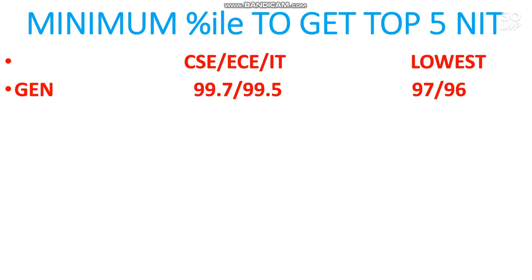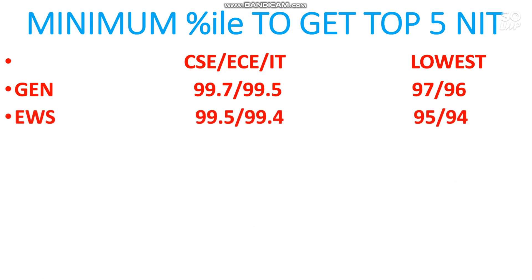For General category other-state students, you need 99.7 percentile for male and 99.5 for female — this is basically the CS branch cutoff. If you score a little lower, you can get EC or IT. For the lowest possible branch in those top 5 NITs, you need at least 97 (male) or 96 (female) percentile. For EWS candidates, you need at least 99.5 to get CS; 99.4 or 99.35 for EC. For females it is 99.4. Please also watch my marks versus percentile video for the next attempt — link is in the i-button and description box.